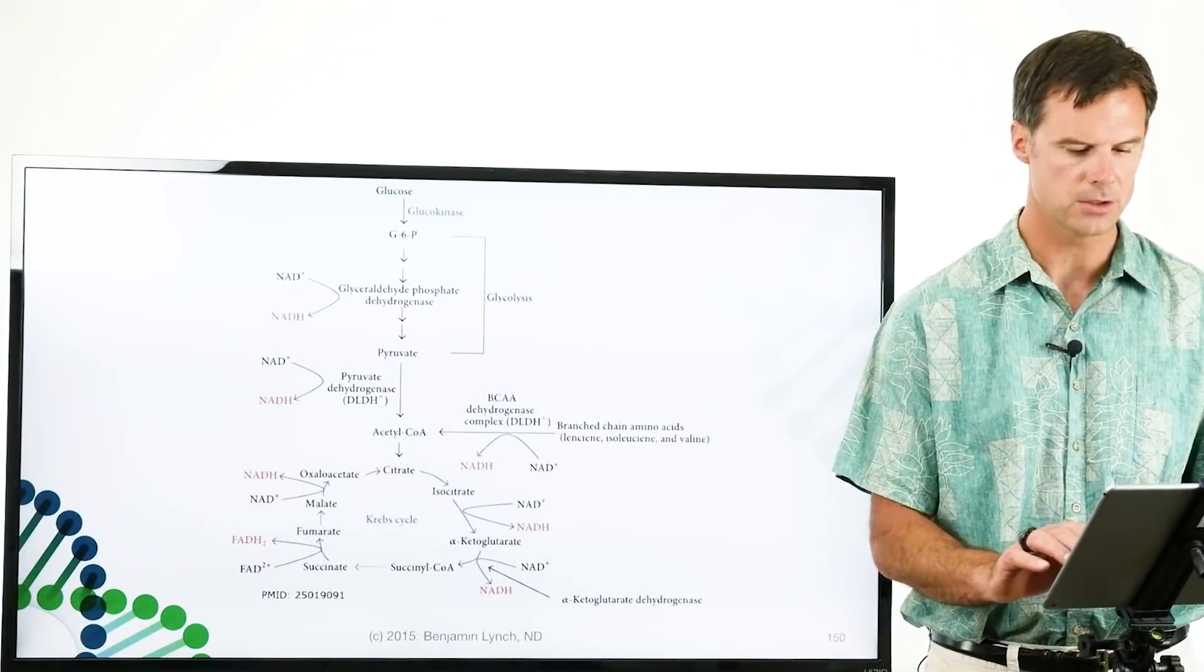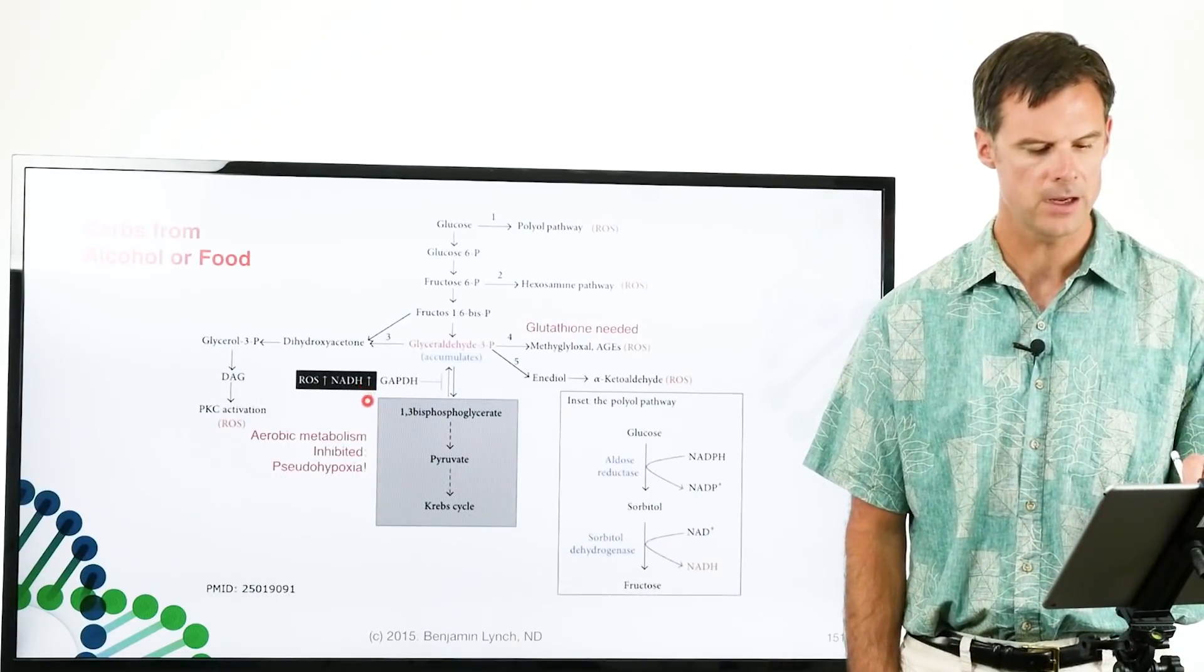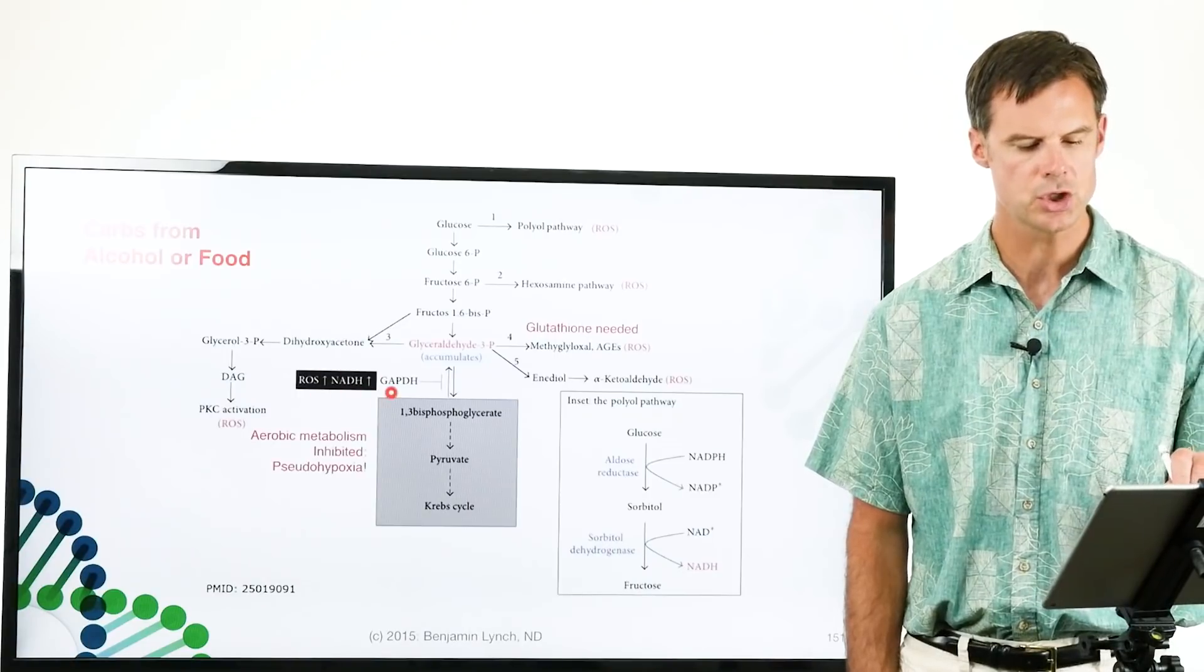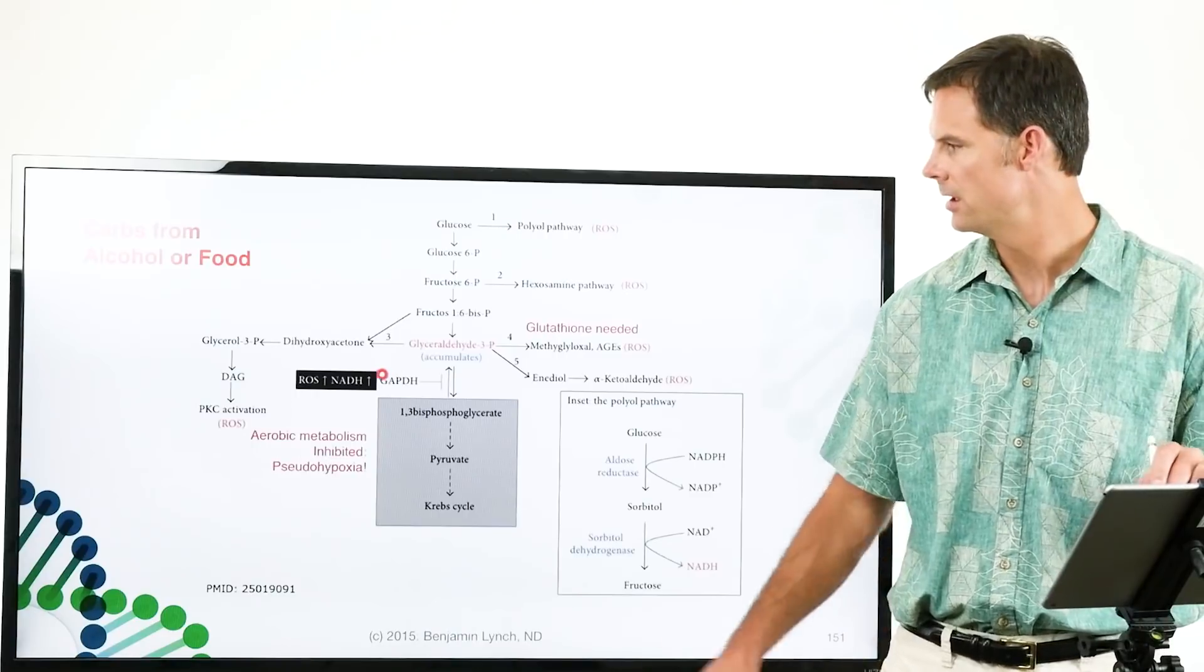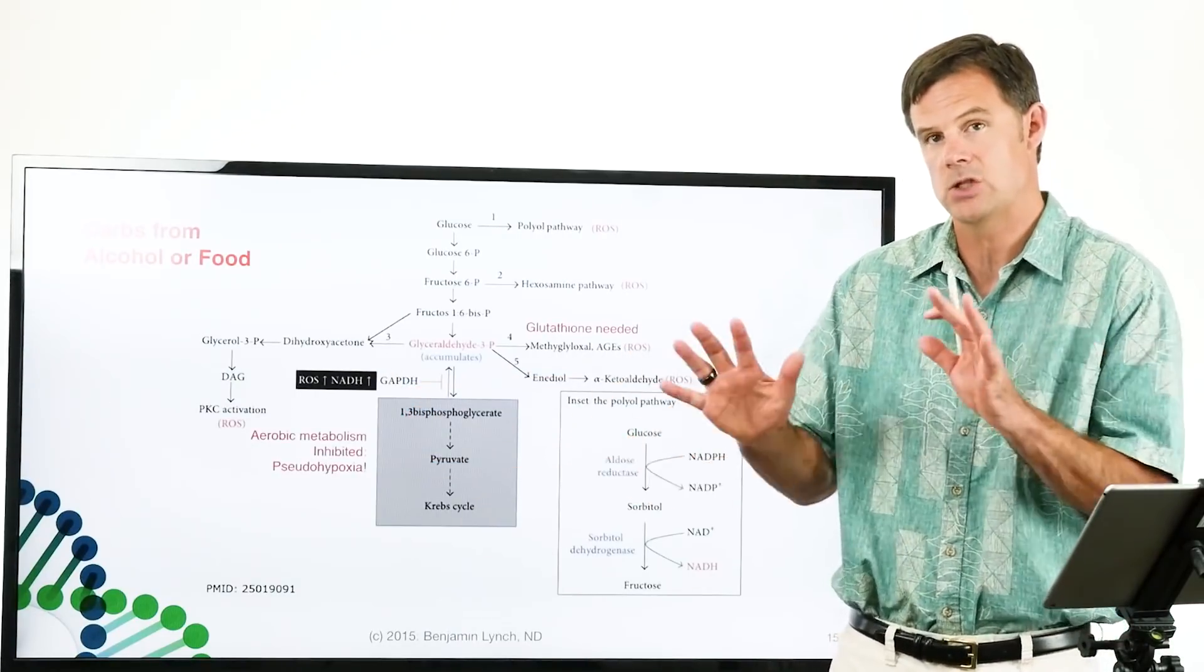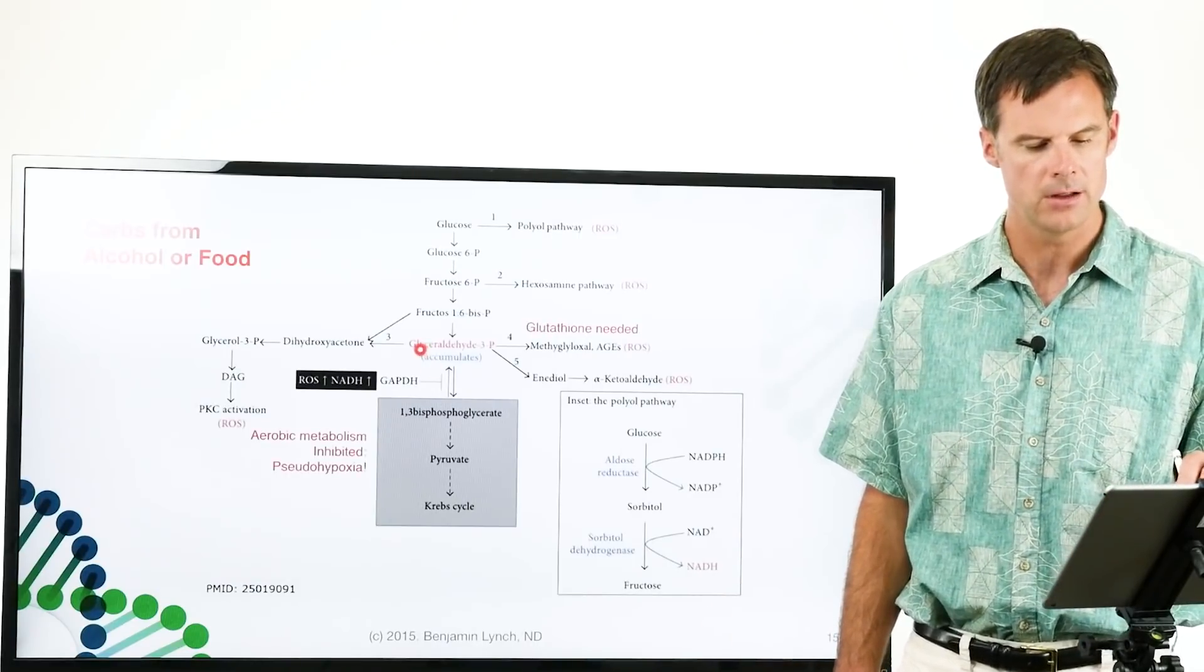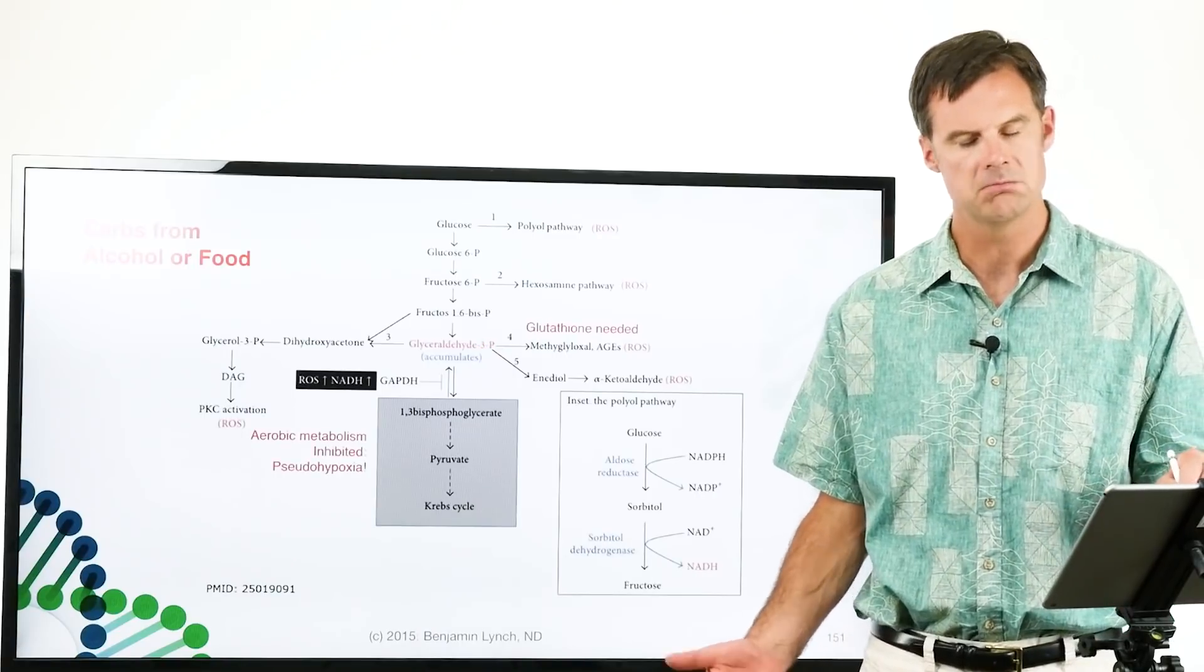What happens when it's too much? When it's too much, see the arrow right here? High NADH, too much NADH will shut down this gene right here. It dirties this gene, the GAPDH gene. It makes it so dirty that you no longer can burn this compound right here, glyceraldehyde-3-phosphate. All right, so what?